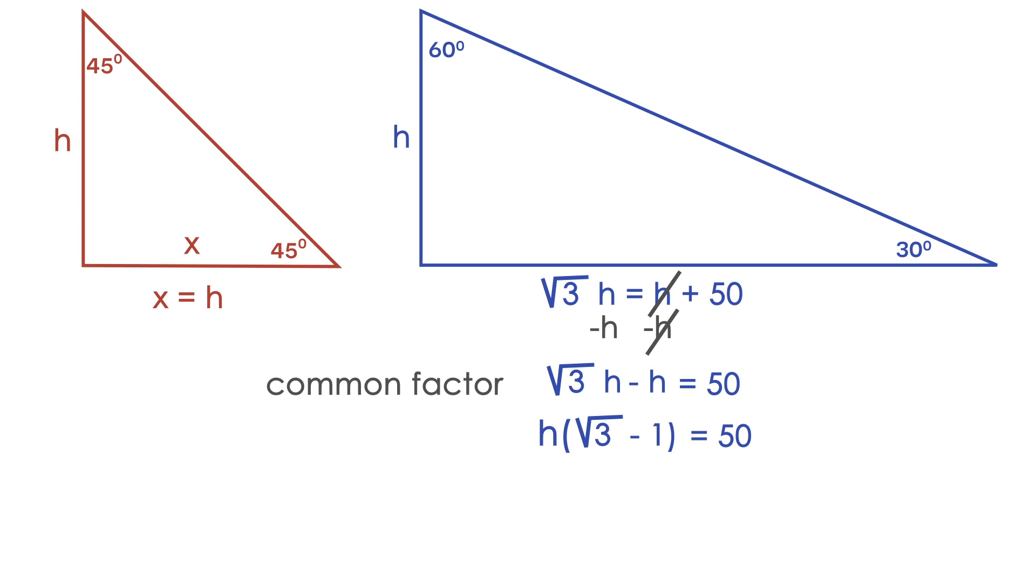Now to get h by itself, we can divide both sides by the square root of 3 minus 1. And we get on the left side, the square root of 3 minus 1 cancel each other out.